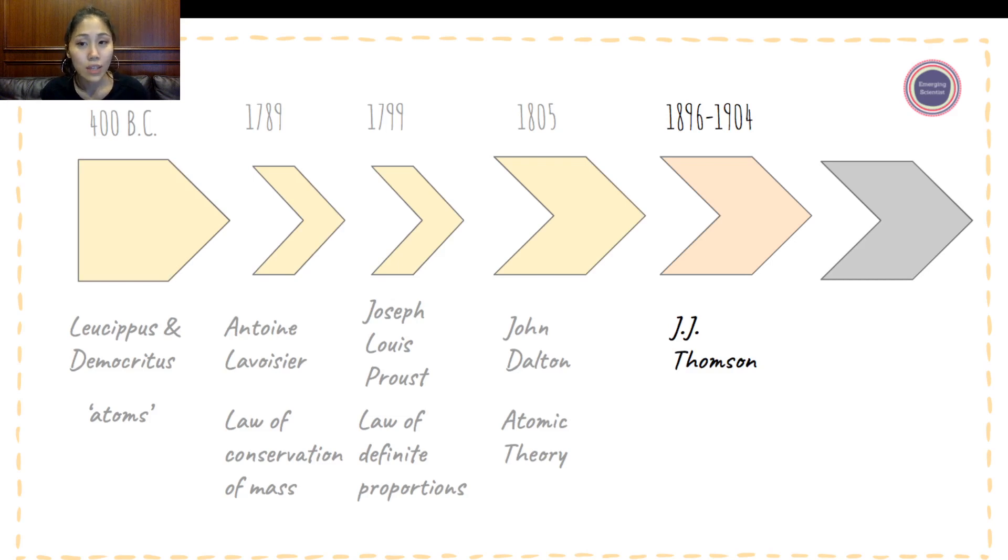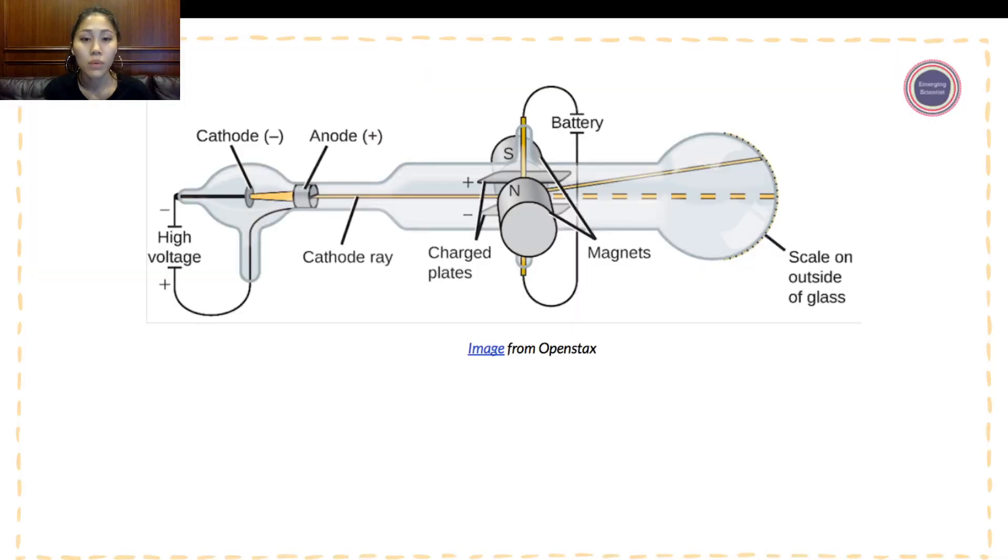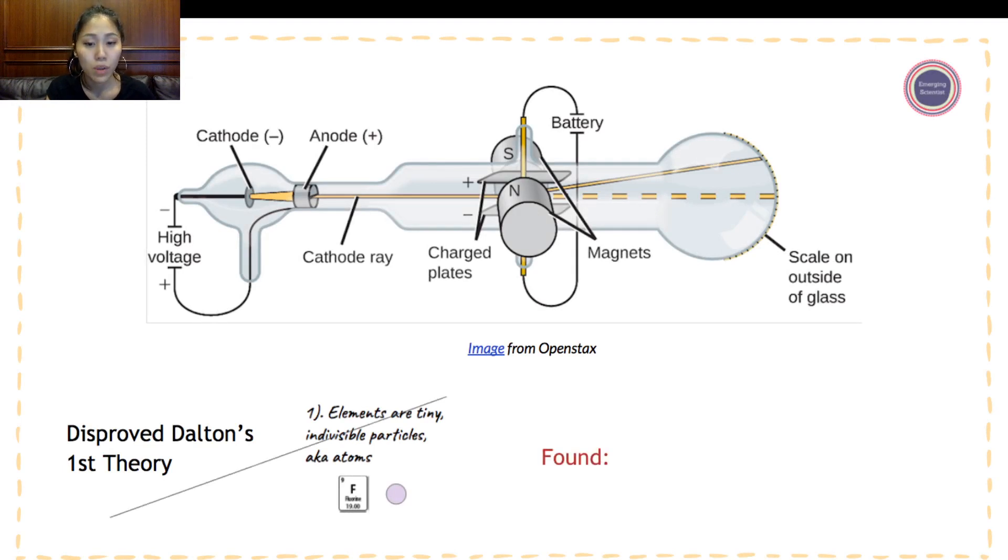From 1896 to 1904, JJ Thompson came up with the idea of the electrons as well as using the plum pudding model to illustrate where the electrons reside. This is JJ Thompson and this is his plum pudding model. JJ Thompson used a cathode ray tube to figure out and disproved Dalton's first theory that elements are tiny, indivisible particles. What he found were three pieces of the electrons. He found that there are electrons, there are some negatively charged particles in atom.